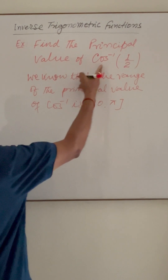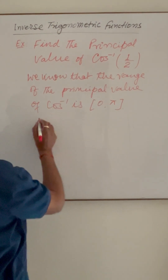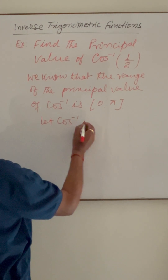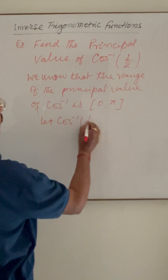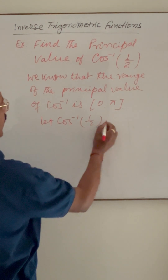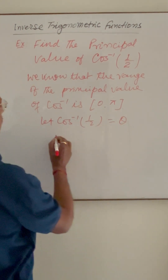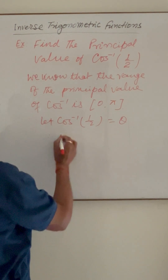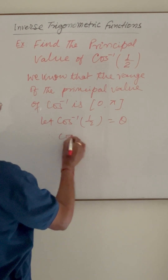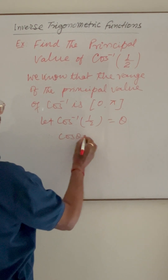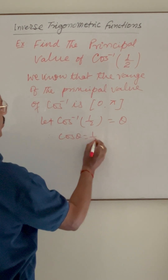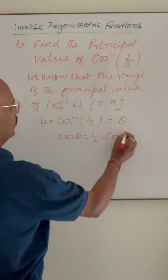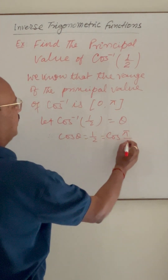Let cos inverse of 1 by 2 be equal to theta. Therefore, we can write cos of theta is equal to 1/2, and 1/2 is cos of pi by 3.